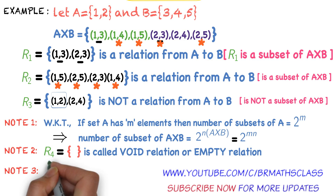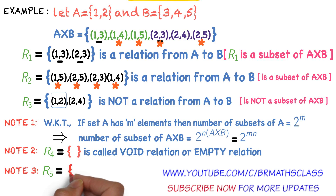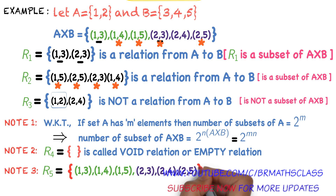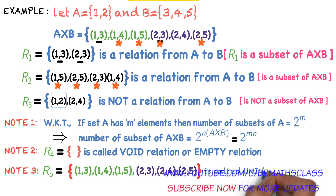Note 3: Consider R5, which contains all the elements of A×B: (1,3), (1,4), (1,5), (2,3), (2,4), (2,5). Is R5 a subset of A×B? From the sets chapter, every set is a subset of itself, so R5 is a subset of A×B, making R5 a relation from A to B. Moreover, this relation is called the universal relation.